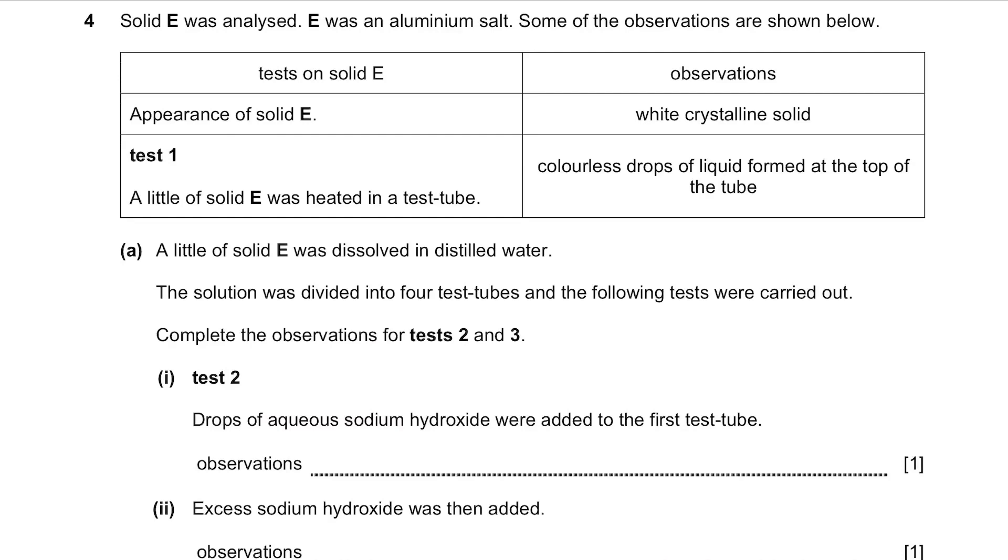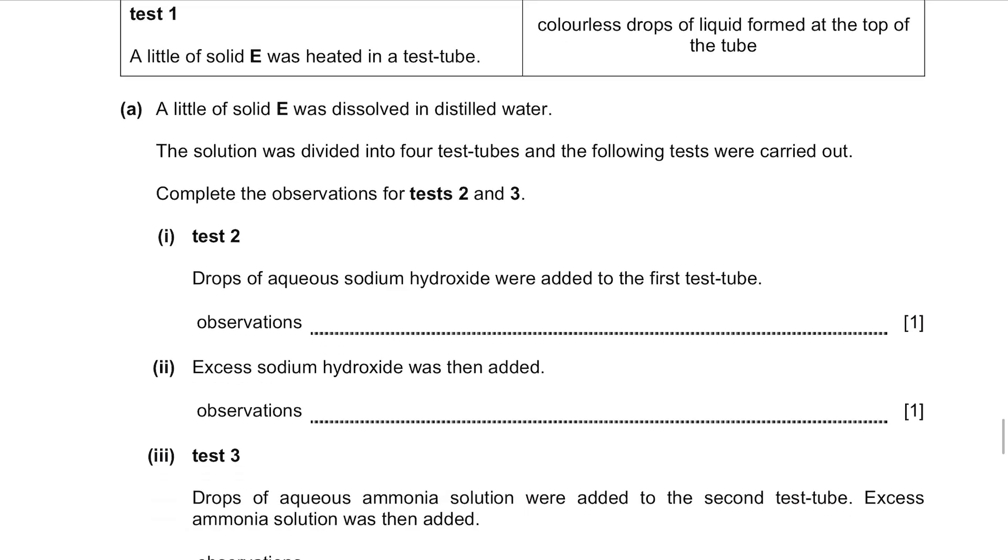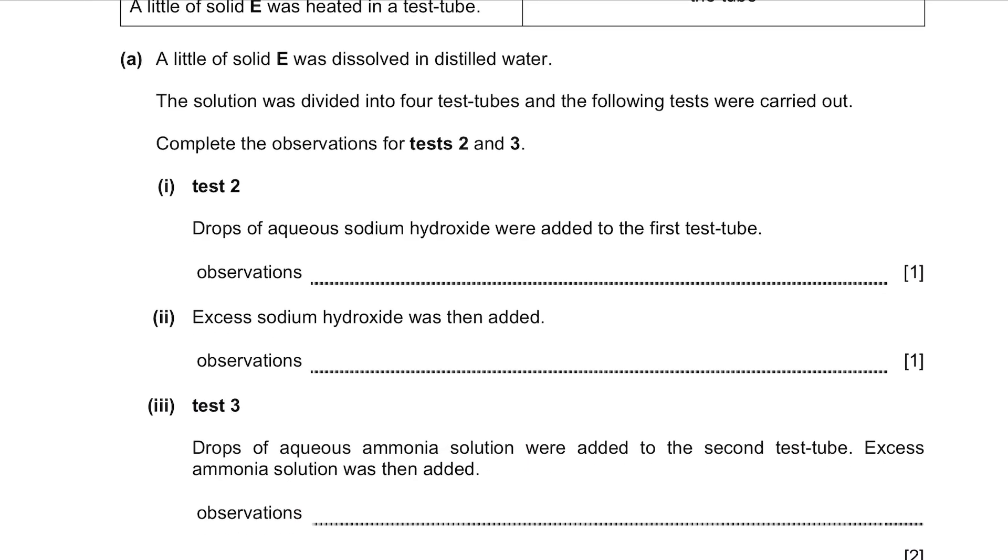Question 4. Solid E was analyzed. E was an aluminum salt. Some of the observations are shown below. The appearance, it is a white crystalline solid and when it was heated, there were colourless drops of liquid at the top of the tube. Part A. A little of solid E was dissolved in distilled water. The solution was divided into 4 test tubes and the following tests were carried out. Complete the observations for tests 2 and 3.